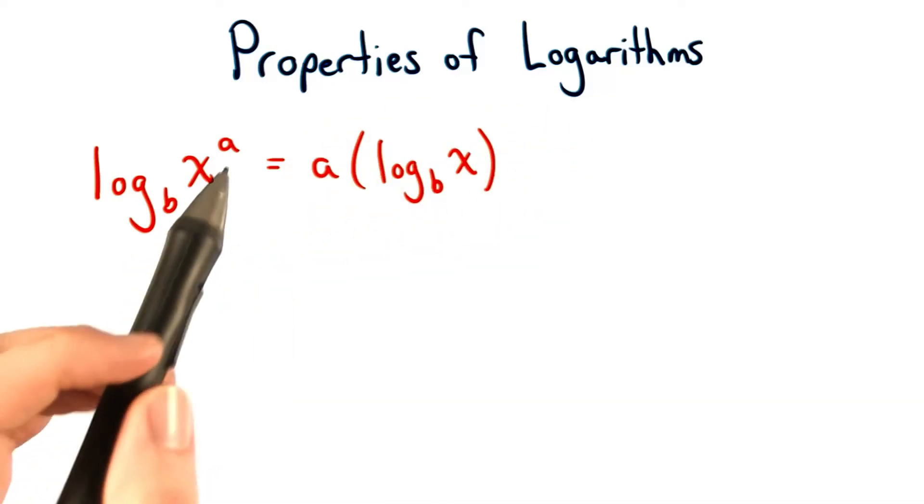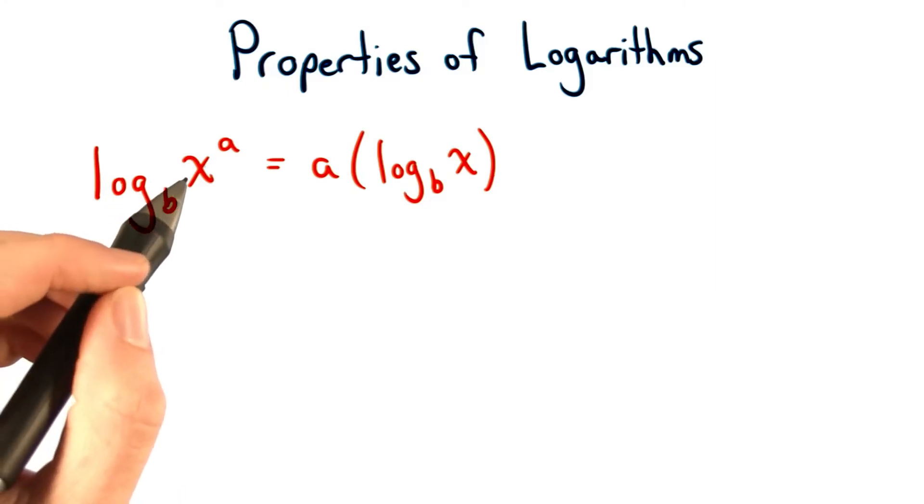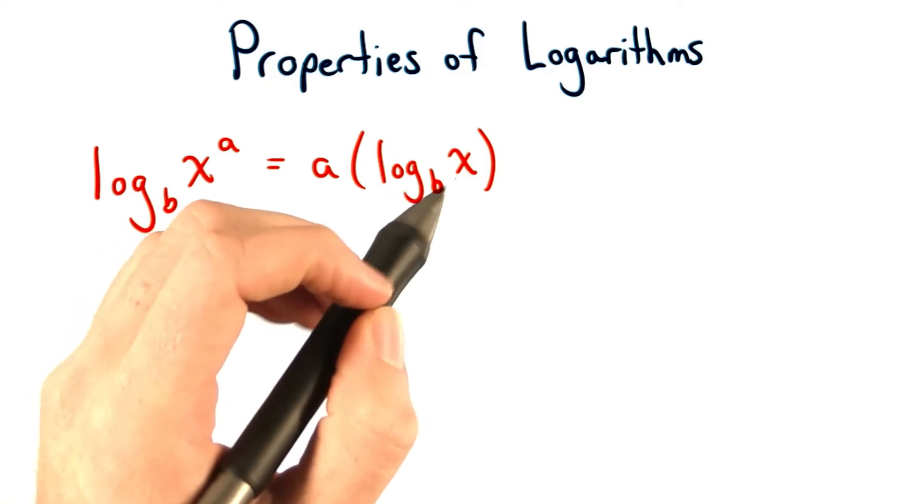The next property of logarithms has to do with exponents or powers. When we have log base b of x to the a, we can set that equal to a times log base b of x.